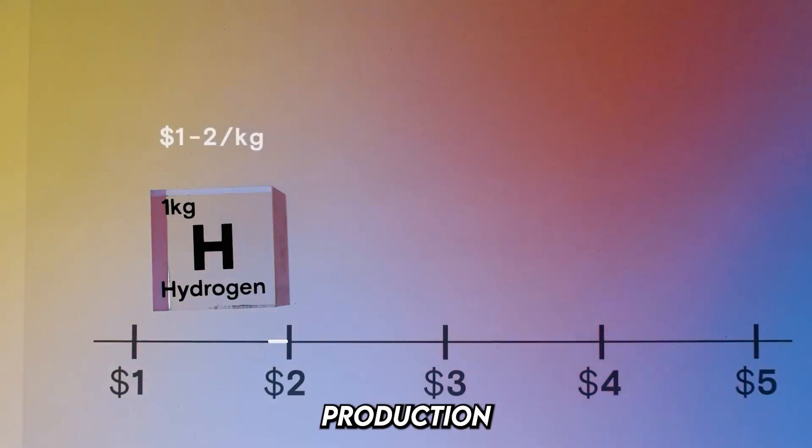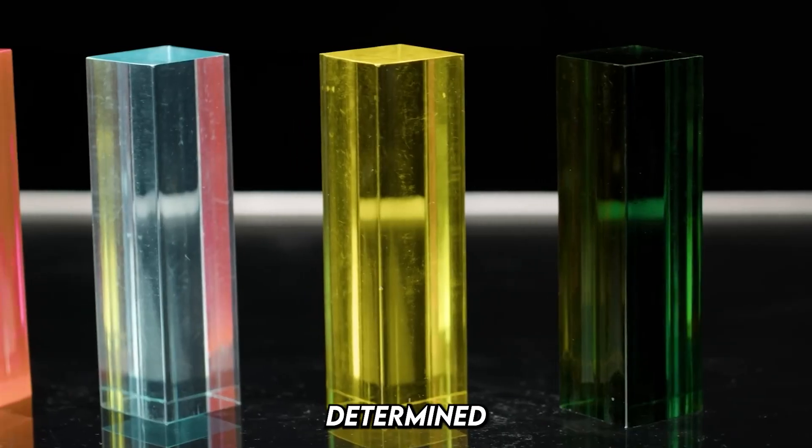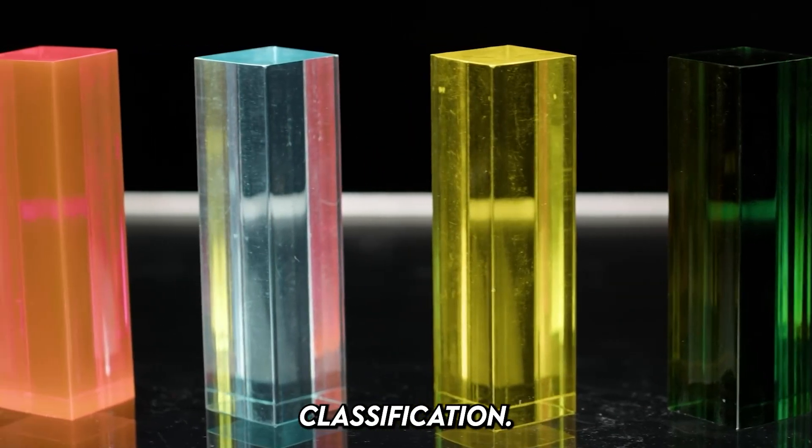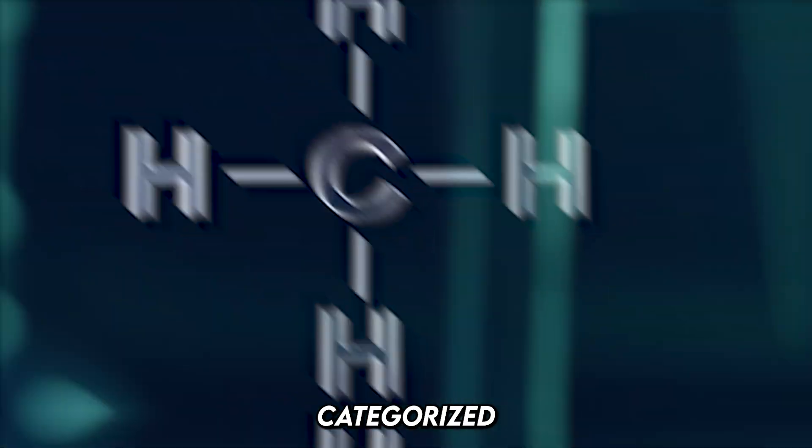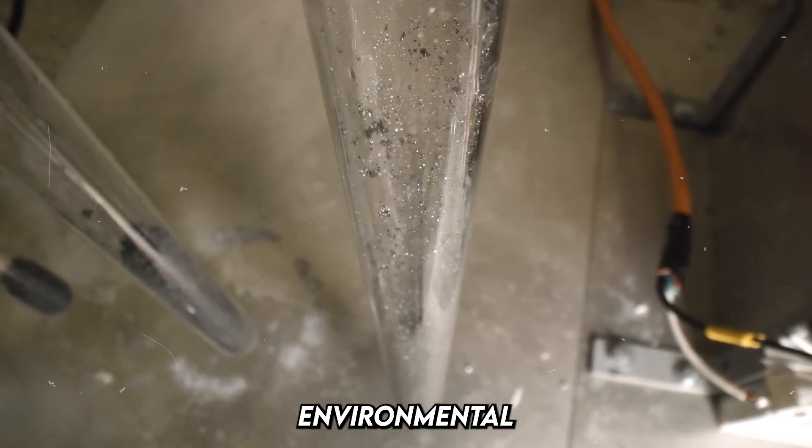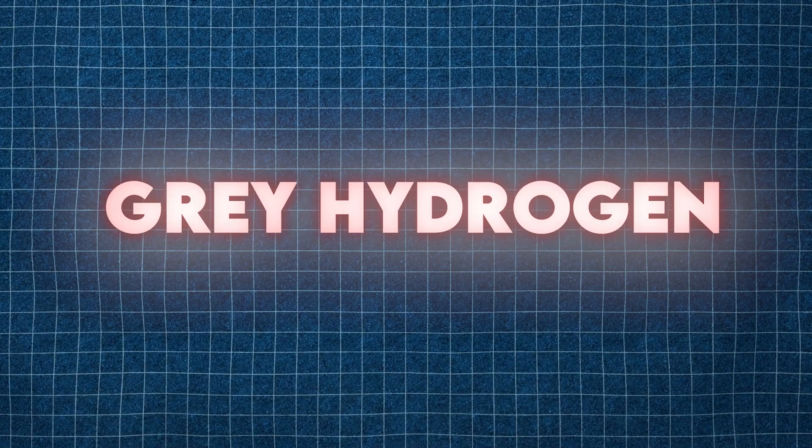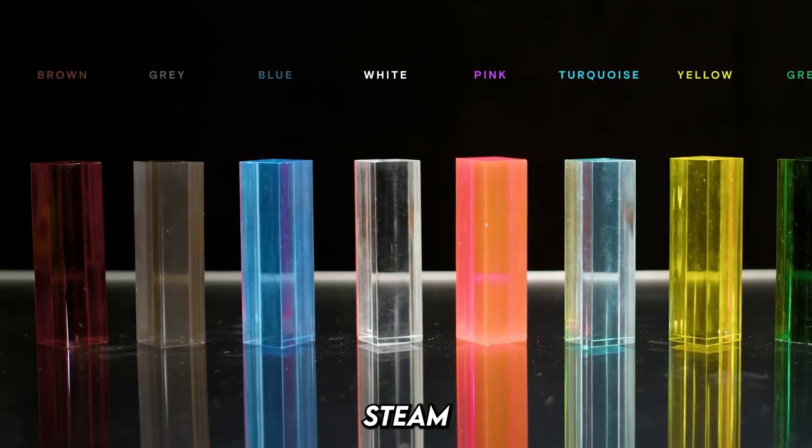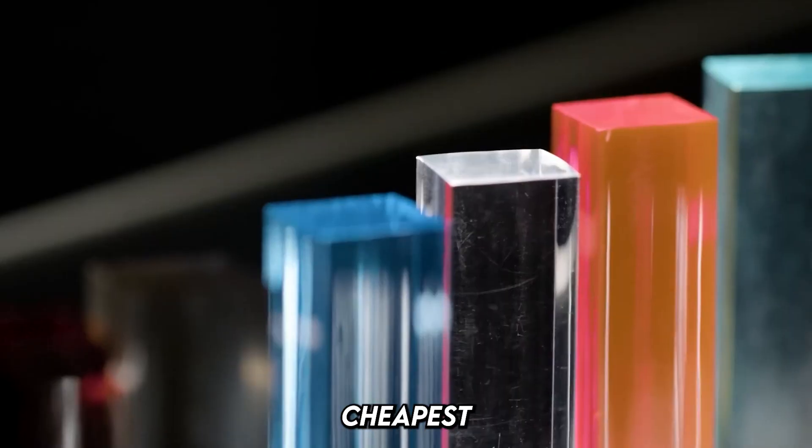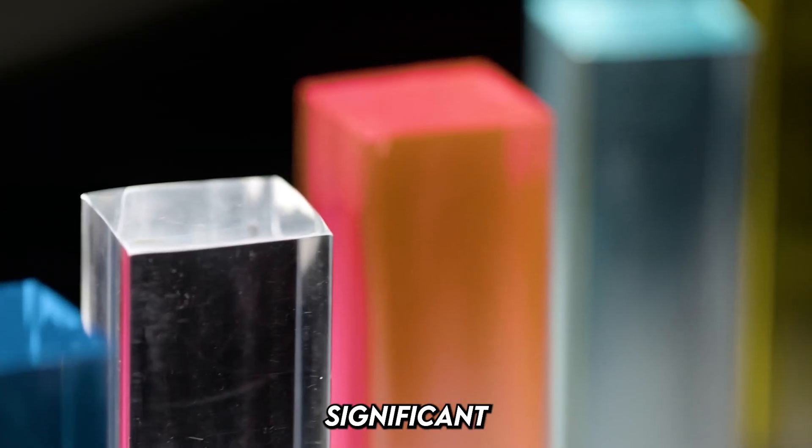The cleanliness of hydrogen production varies, and its purity is determined by its color classification. Different colors of hydrogen: Gray hydrogen is produced from fossil fuels like natural gas through a process called steam methane reforming. It's the cheapest form of hydrogen but emits significant CO2.